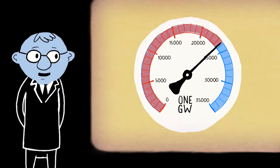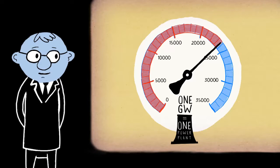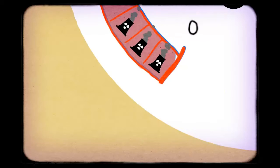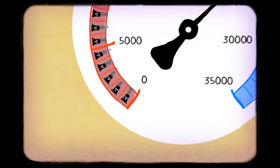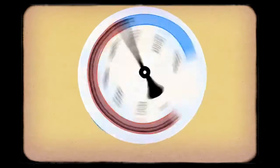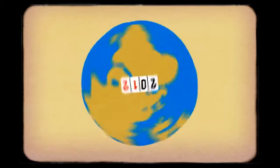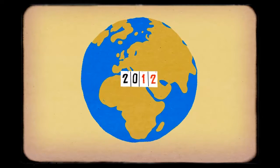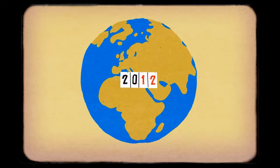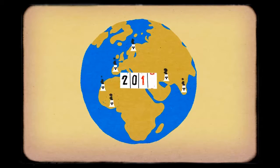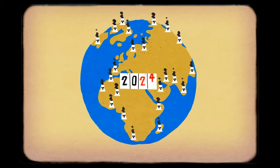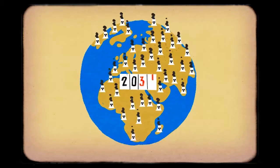I use the unit gigawatt here because it's easy to remember that one nuclear power plant is one gigawatt. So that means that at the moment, if we would run on nuclear 100%, we would need 16,000 nuclear power plants. We want to reduce CO2, and that means that in the next 40 years, we have to install 15,000 gigawatts of new capacities.